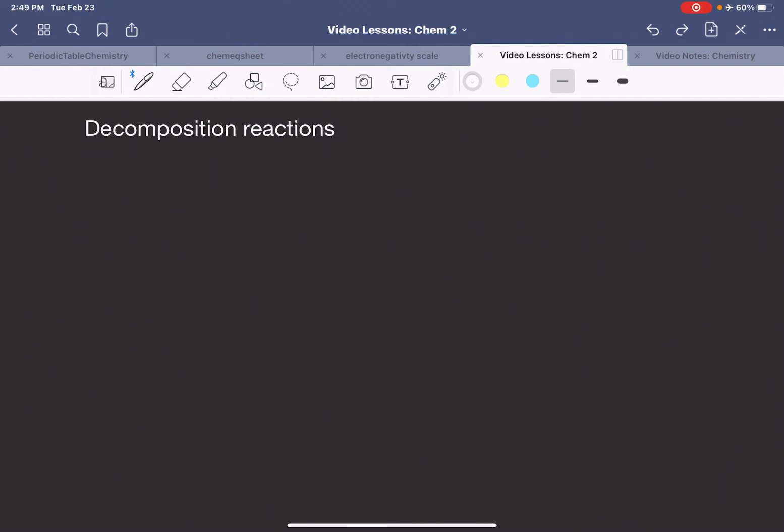And so this is essentially sort of the reverse process of a synthesis or combination reaction. So let's just jump in and start taking a look at some classic examples or just different elements of, and what I mean by elements is different aspects, different characteristics of different types of decomposition reactions. Because different types of things will break down, which will yield differing types of products.